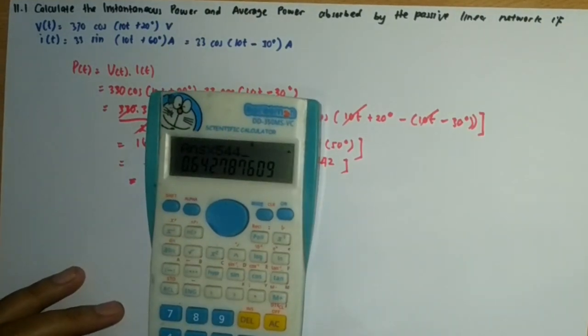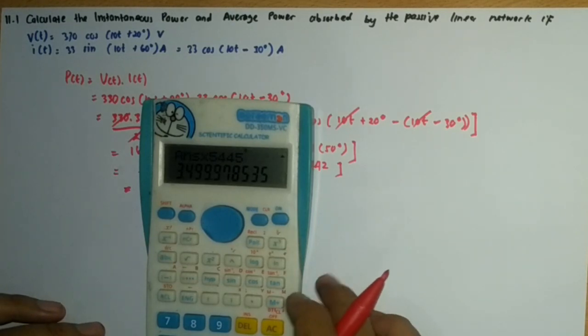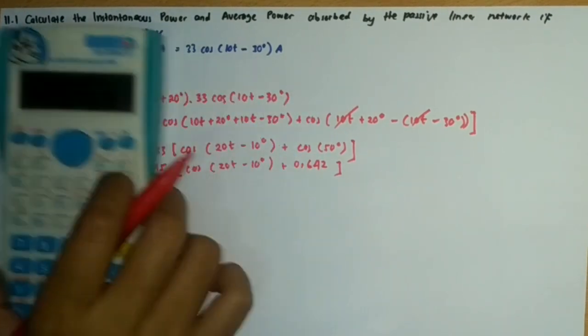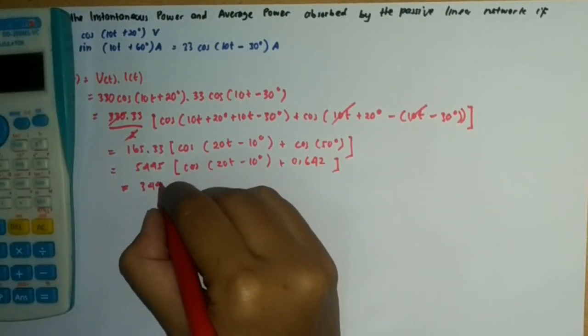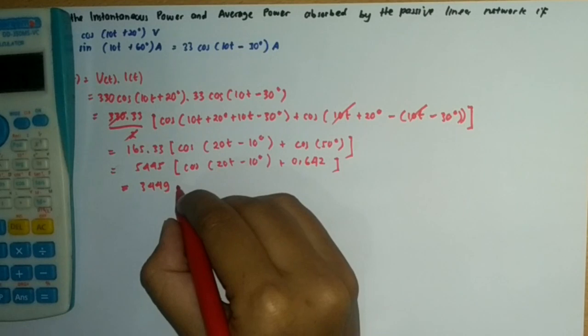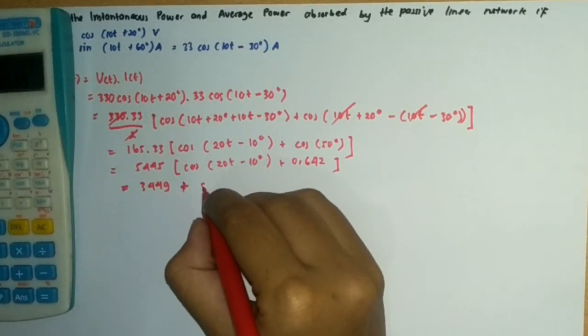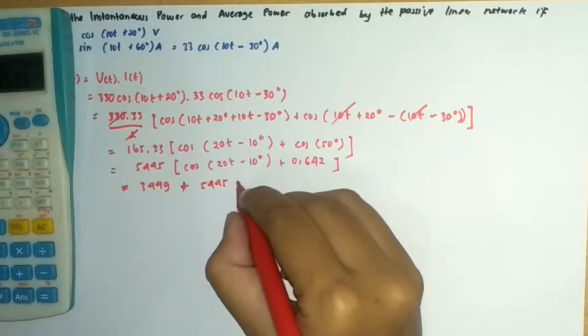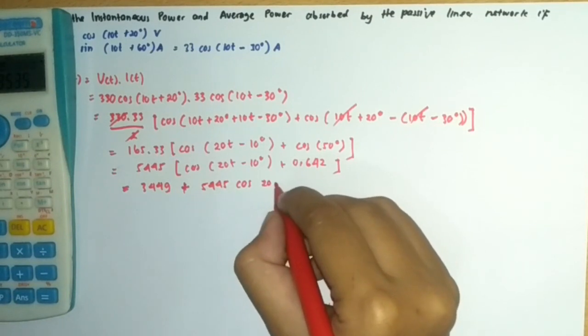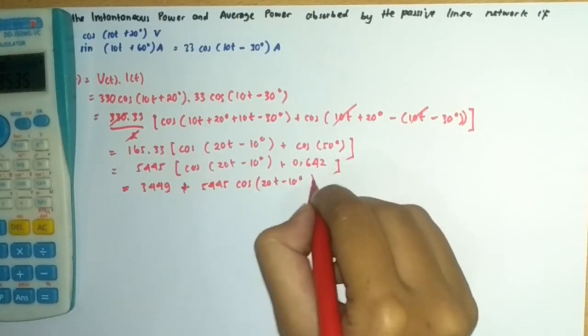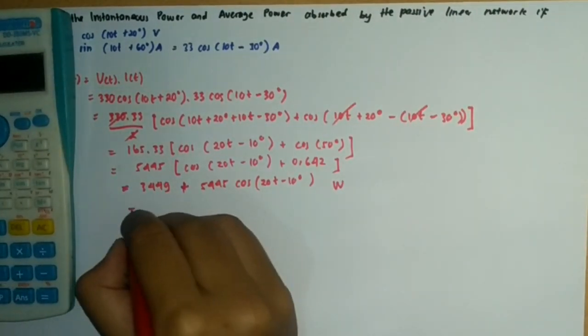We calculate these terms separately. Multiplying everything out, we get 3,499 multiplied by cos(20t - 10°) plus another term.